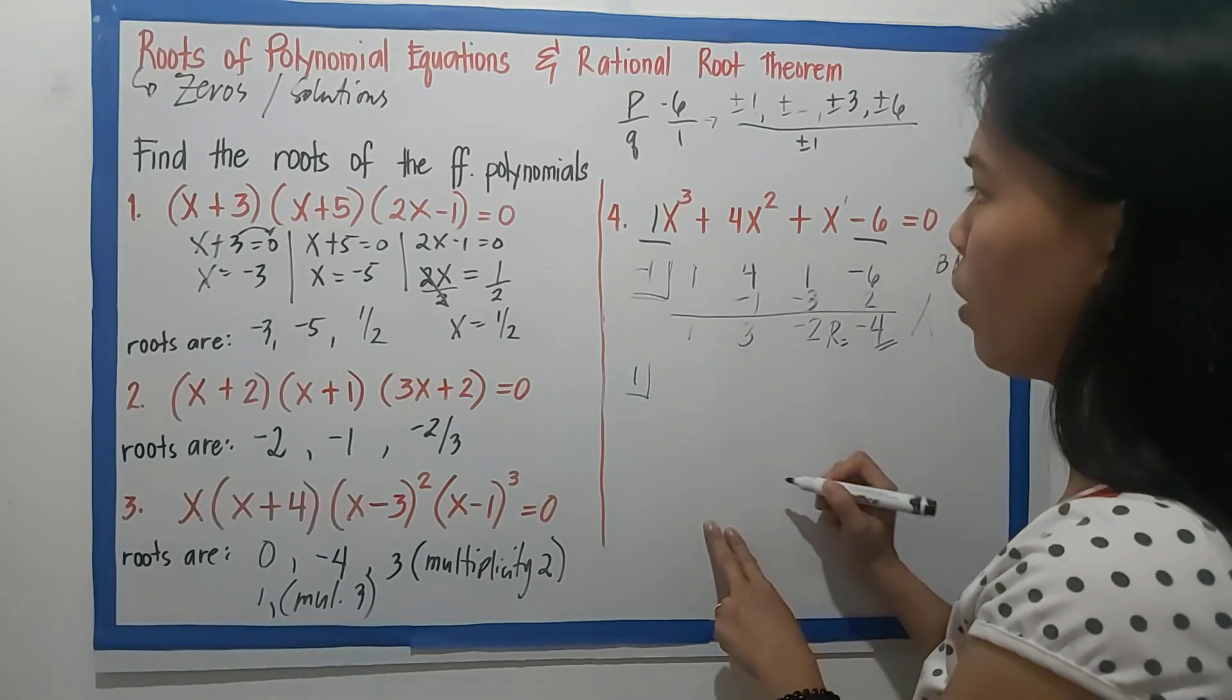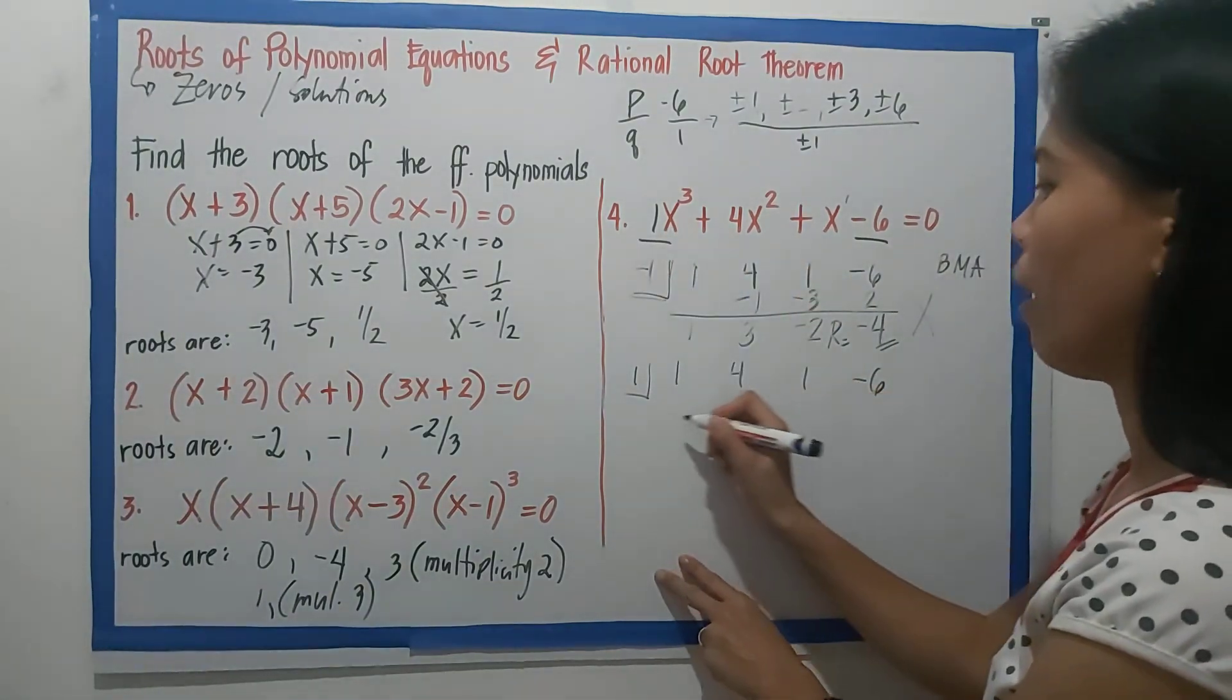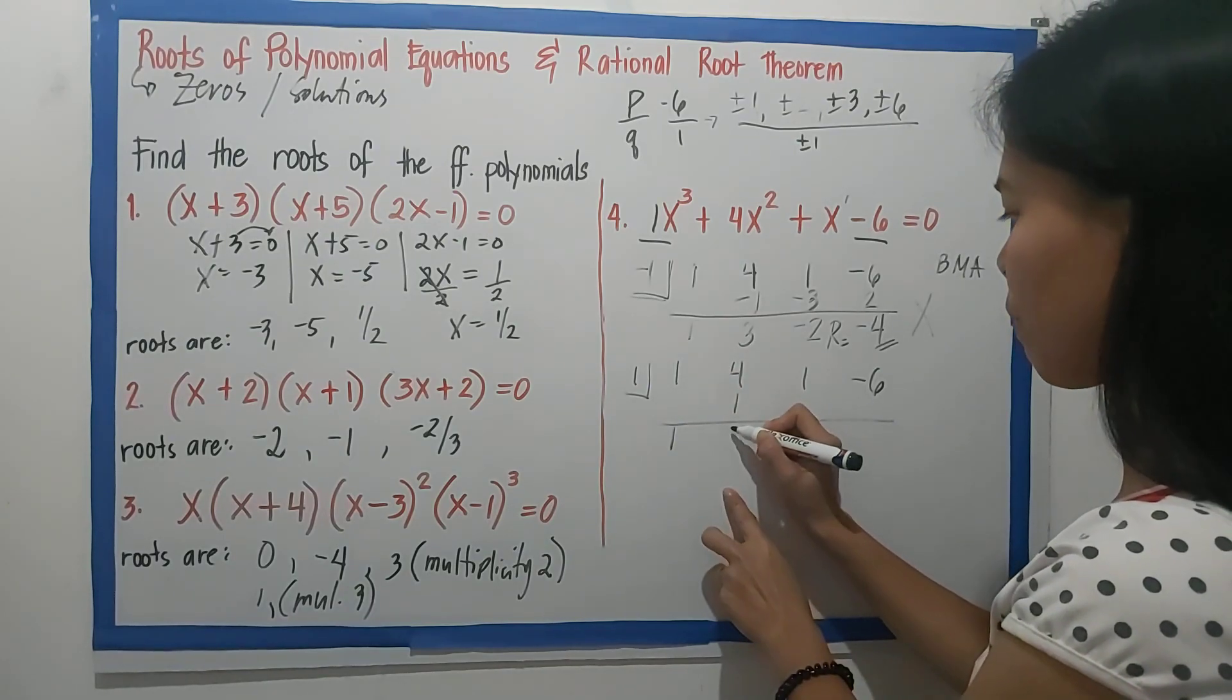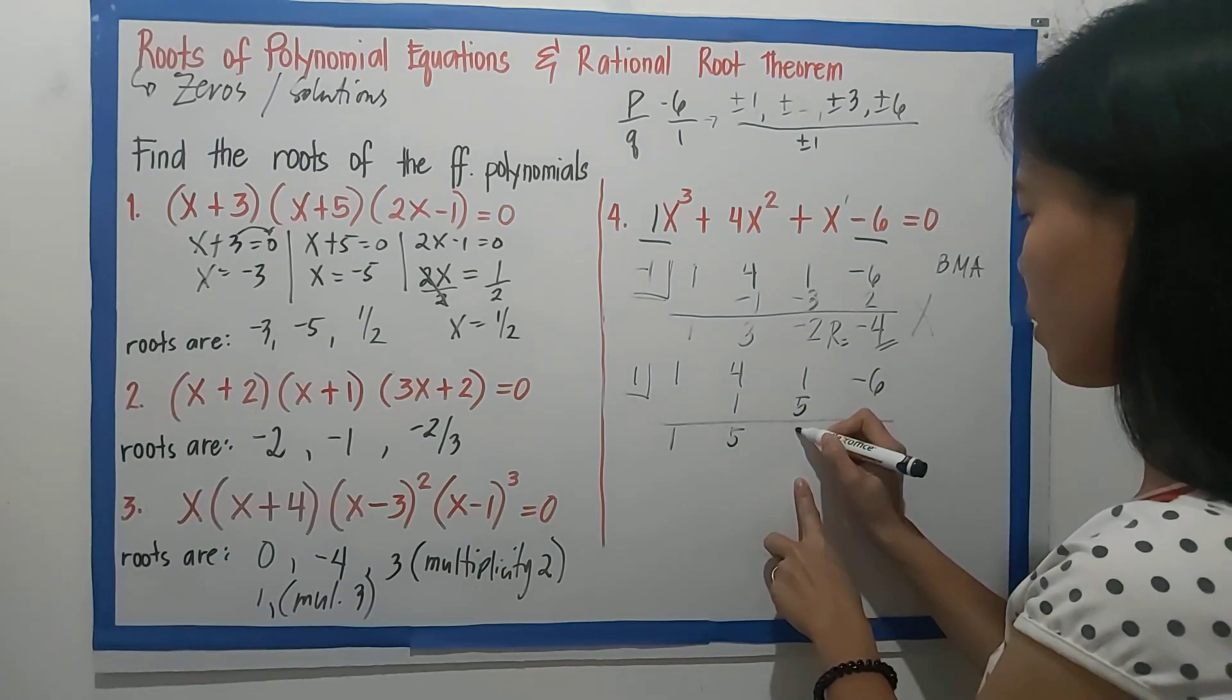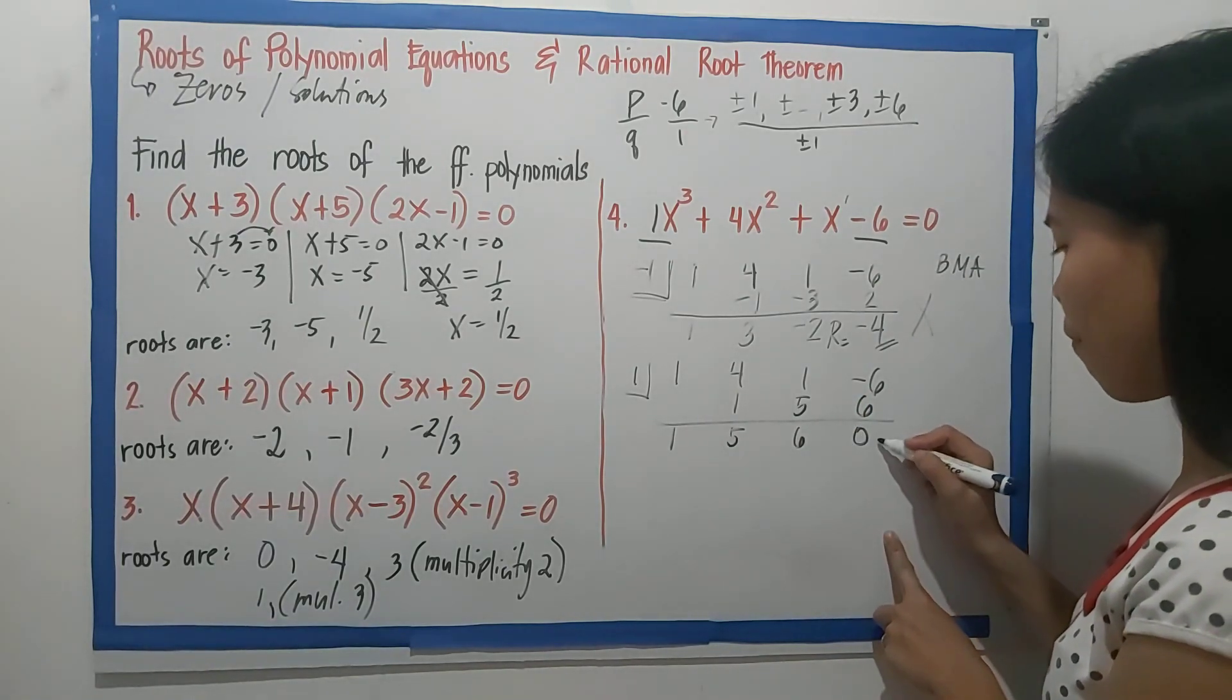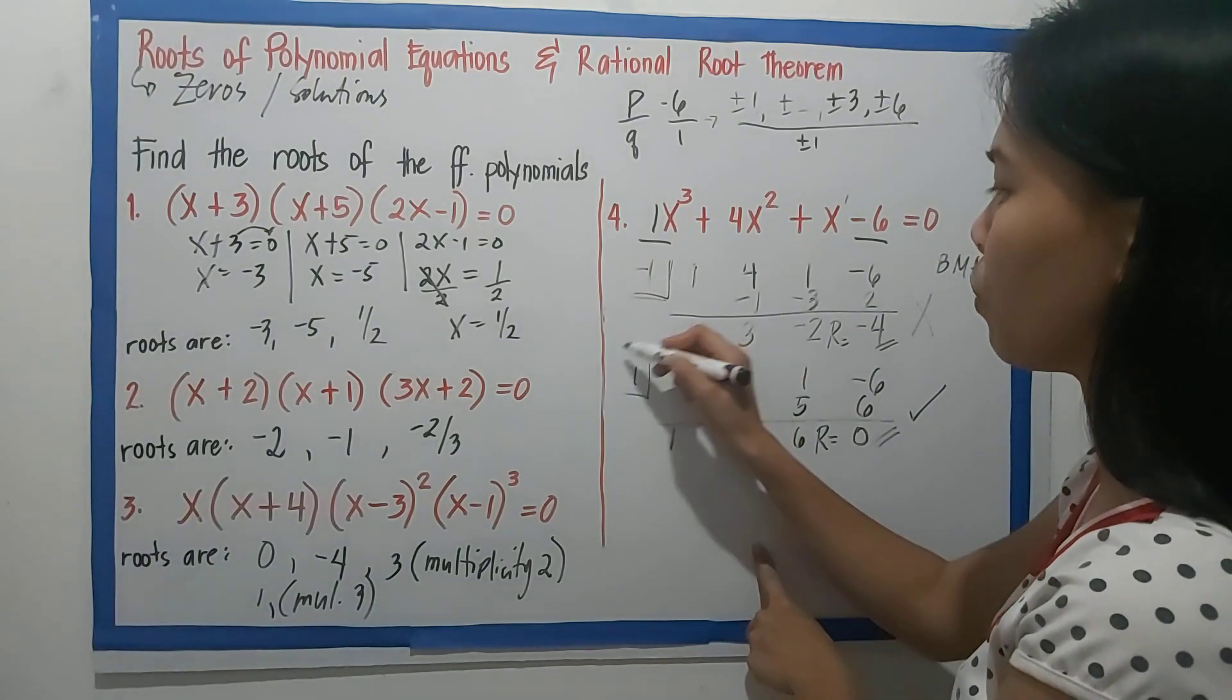Let's try positive 1 this time. We copy again our coefficients. We have 1, 4, 1, -6. And apply BMA for synthetic division. So, bring down 1. 1 times 1 is 1. 4 plus 1 is 5. 5 times 1 is 5. 1 plus 5 is 6. 6 times 1 is positive 6. And -6 plus 6 is 0. Finally, we have our 0 as remainder. Therefore, we just proved that 1 is a root.